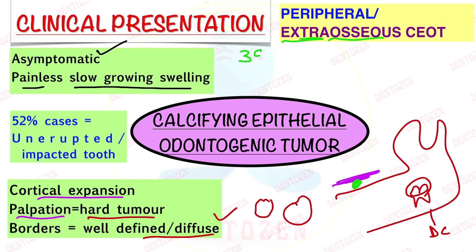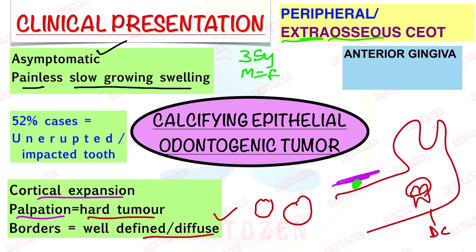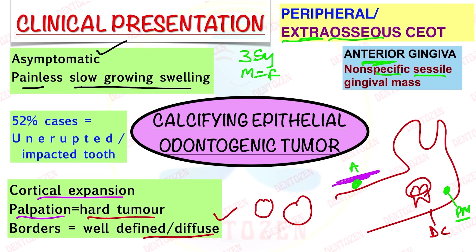Peripheral CEOT occurs at a mean age of 35 years, and males and females are equally affected. For peripheral CEOT, the most common site is the anterior gingiva, which is in contrast to intraosseous CEOT for which the most common site is the posterior mandible. It presents as a non-specific sessile gingival mass — sessile means it is directly attached to the gingiva — and clinically it can resemble other gingival tumors like fibroma and peripheral giant cell granuloma.